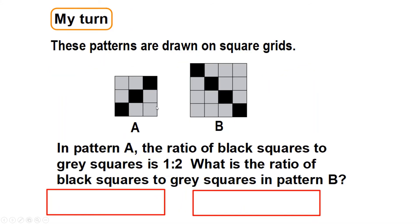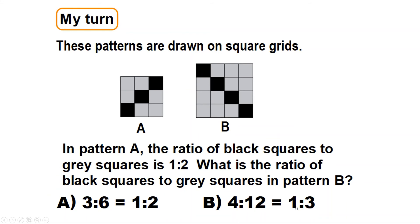These ones are quite easy — you are going to be looking at the ratio and simplifying. In pattern A, I count one, two, three black squares and one, two, three, four, five, six grey squares — that's three to six, which we know simplifies to one to two. For the next pattern: I count four black squares and twelve grey squares, giving four to twelve. How many fours are in twelve? Three — so four to twelve simplifies to one to three.